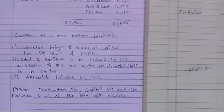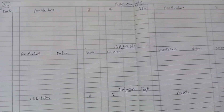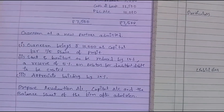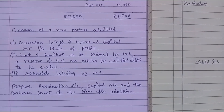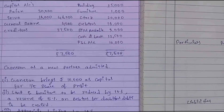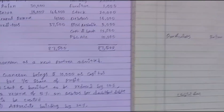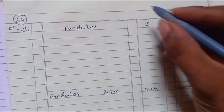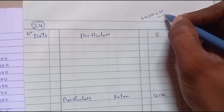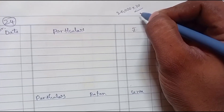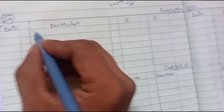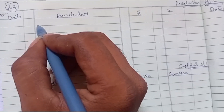First we go to the revaluation account. Stock and furniture are to be reduced by 10%. Stock is 20,000 — 10% of 20,000 is 20,000 into 10 by 100, which is 2,000. Since this is a decrease in asset, it goes on the debit side of the revaluation account: To Stock 2,000.